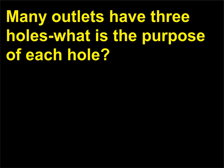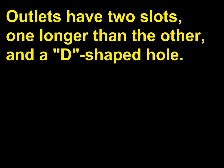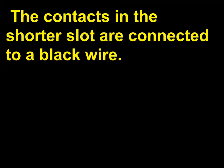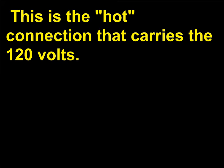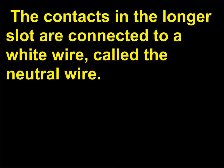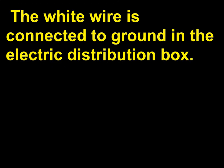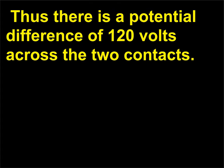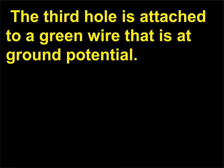Many outlets have three holes — what is the purpose of each hole? Outlets have two slots, one longer than the other, and a D-shaped hole. The contacts in the shorter slot are connected to a black wire — the hot connection that carries 120 volts. The contacts in the longer slot are connected to a white wire, called the neutral wire, which is connected to ground in the electric distribution box. Thus there is a potential difference of 120 volts across the two contacts. The third hole is attached to a green wire that is at ground potential.